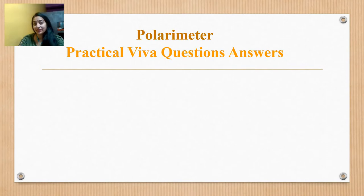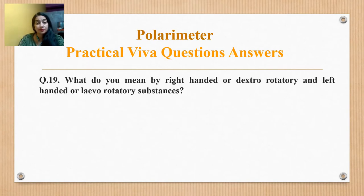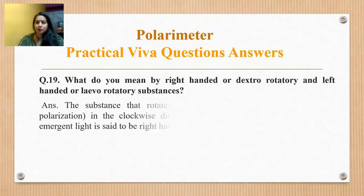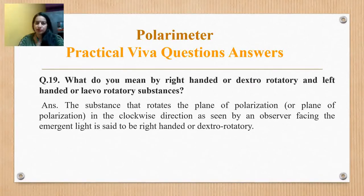What do you mean by right-handed dextrorotatory or left-handed levorotatory substances? A substance that rotates the plane of polarization in a clockwise direction as seen by an observer facing the emergent light is said to be right-handed or dextrorotatory. A substance that rotates it in an anticlockwise direction is said to be left-handed or levorotatory.